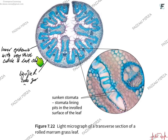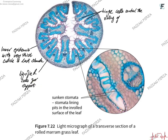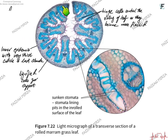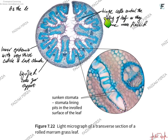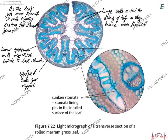In marram grass the leaf folds. The lower epidermis is very thick, lacks stomata, and has a thick cuticle. There are lignified cells for support and hinge cells which control the rolling of the leaf — as they become more flaccid, the leaf rolls. The upper epidermis folds inward and the lower epidermis with its thick cuticle faces outside. As the leaf gets more flaccid it rolls more tightly, shutting down the stomatal opening from direct contact with the external environment.